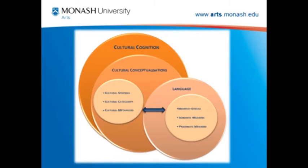The relationship between cultural conceptualizations and language can be captured in a diagram where you have, at the background, the macro level of cultural cognition, then cultural conceptualizations, and then aspects of language entrenched in those conceptualizations. The units of cultural conceptualizations — such as cultural schemas, cultural categories, and cultural metaphors — may be closely associated with features of language, encoding syntactic features, semantic meaning, pragmatic meaning, and also discourse structure.